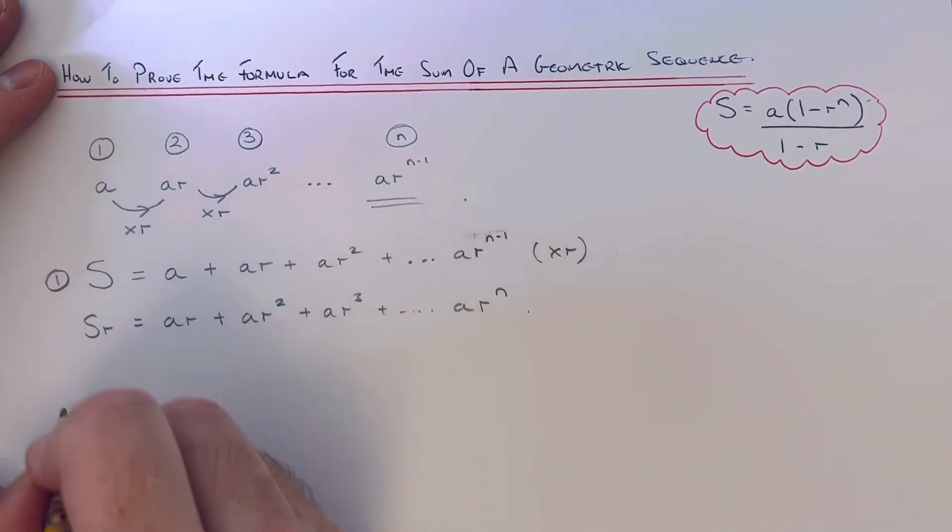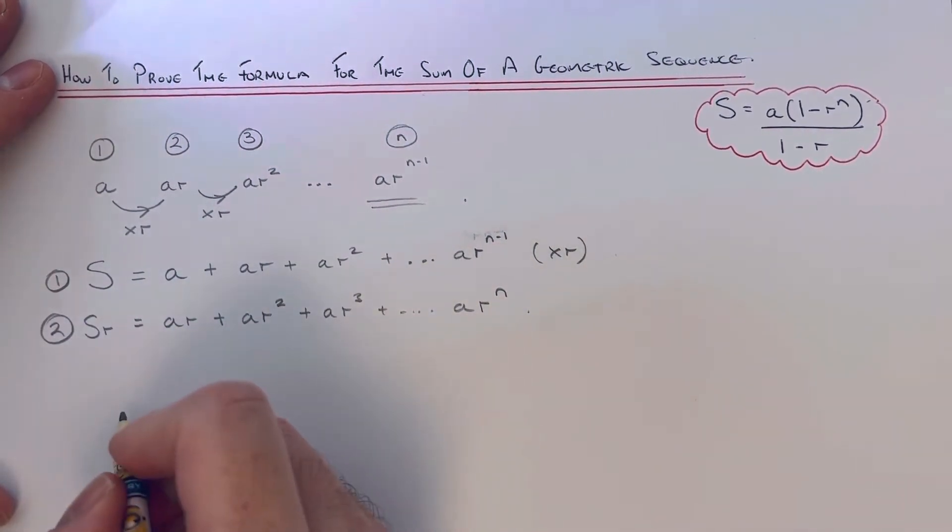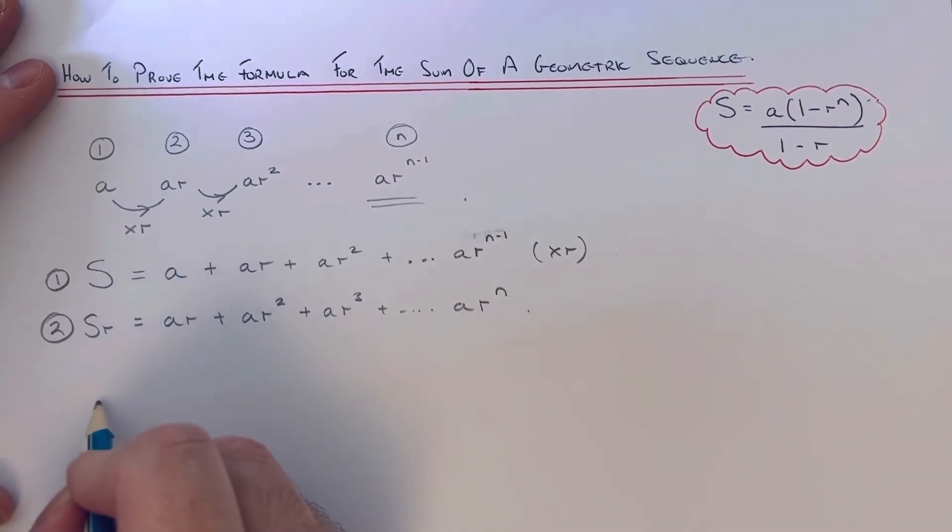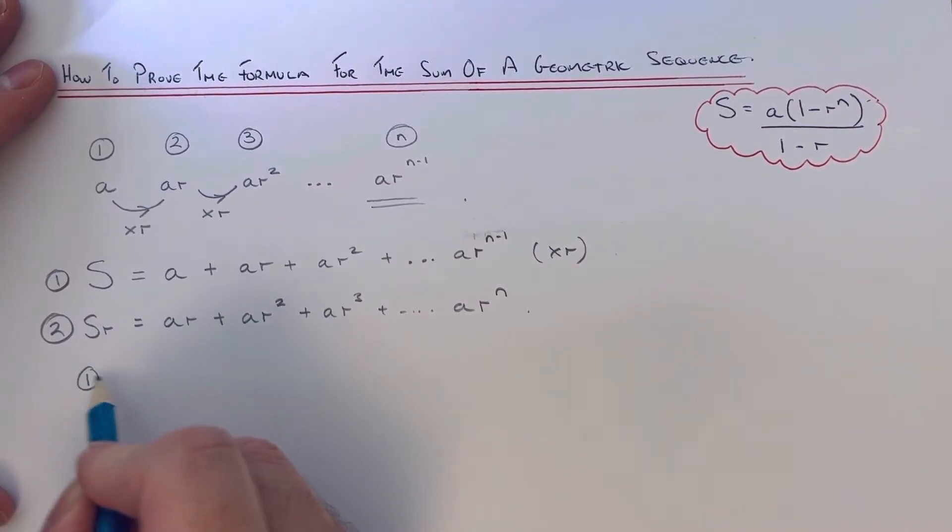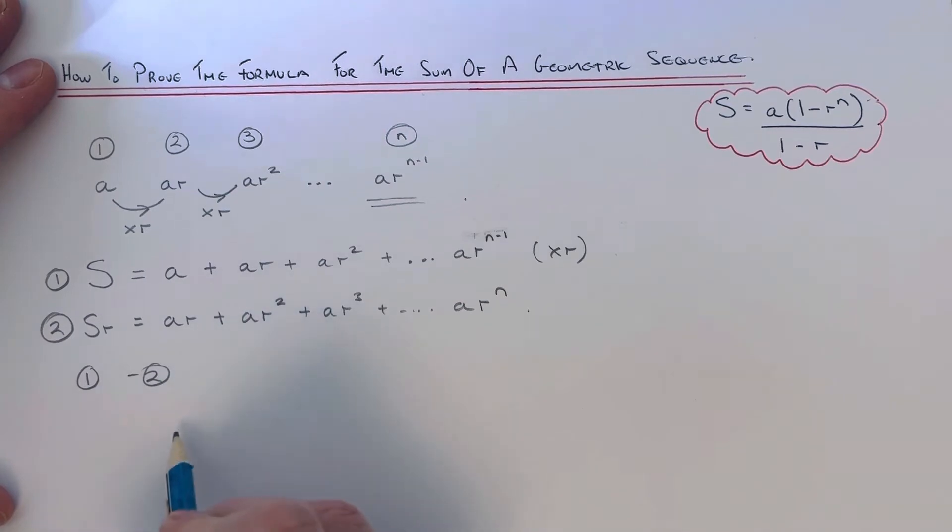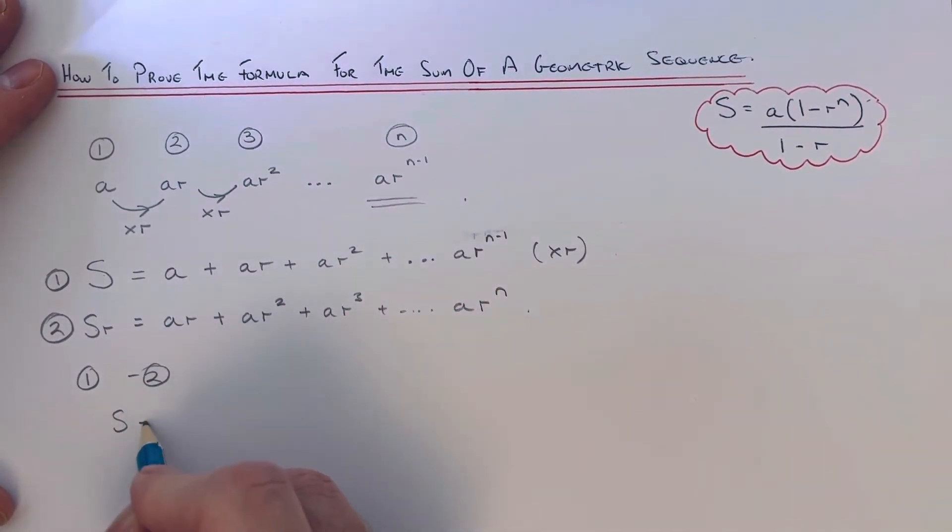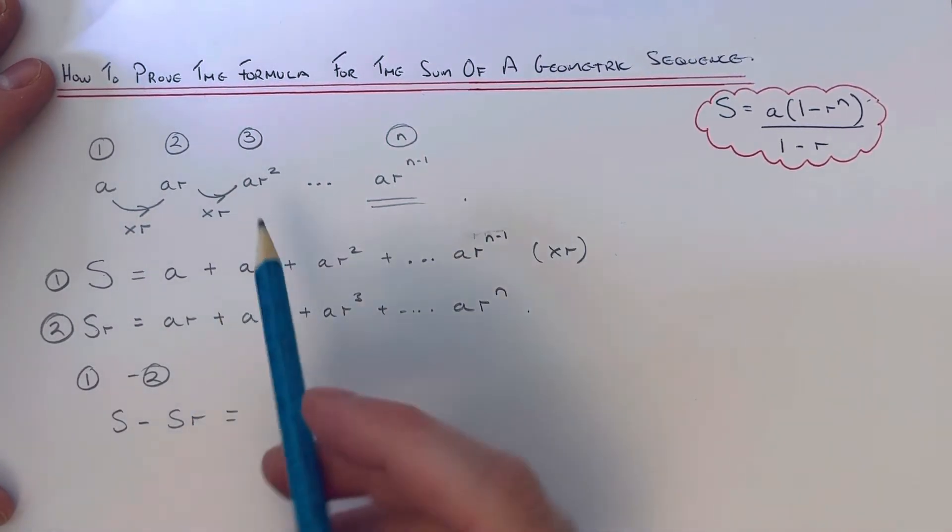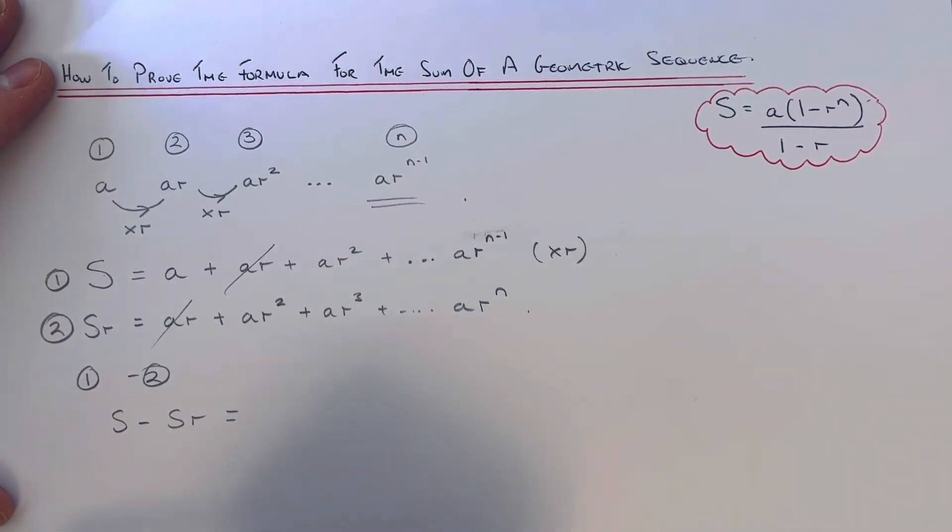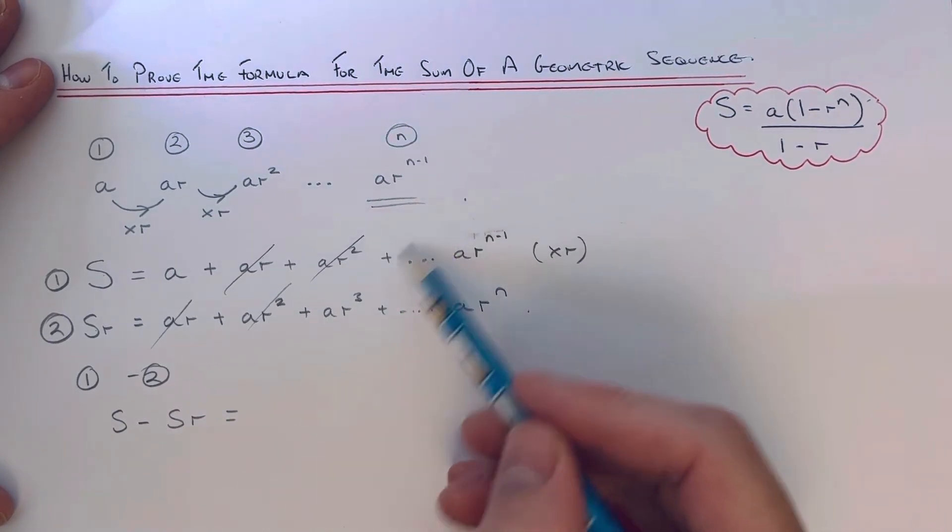So if you call this first formula number one and our second one number two, we're now going to take these away. So if you do number one take away number two, we get S minus Sr on the left hand side. And on the right hand side, this term and this term will cancel out.